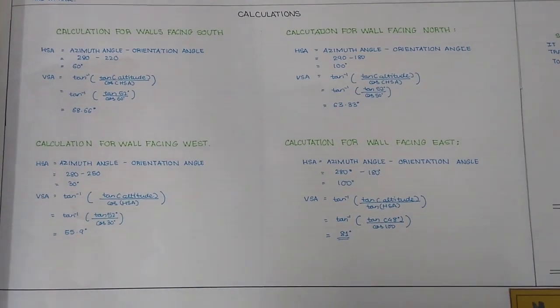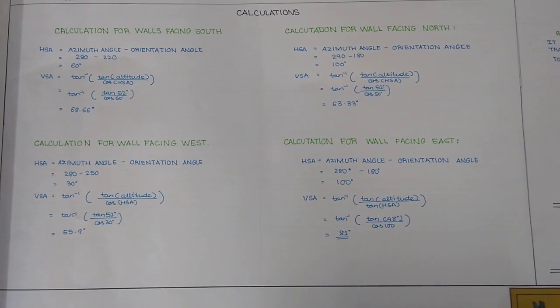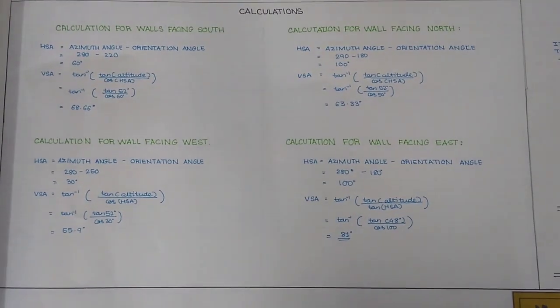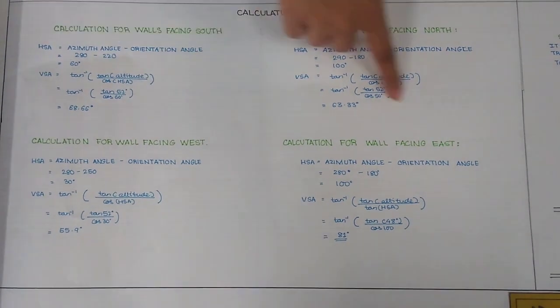Calculations to derive the height and the width of the windows or any openings have been found out here for all the angles, for all the directions such as south, west, east and north.